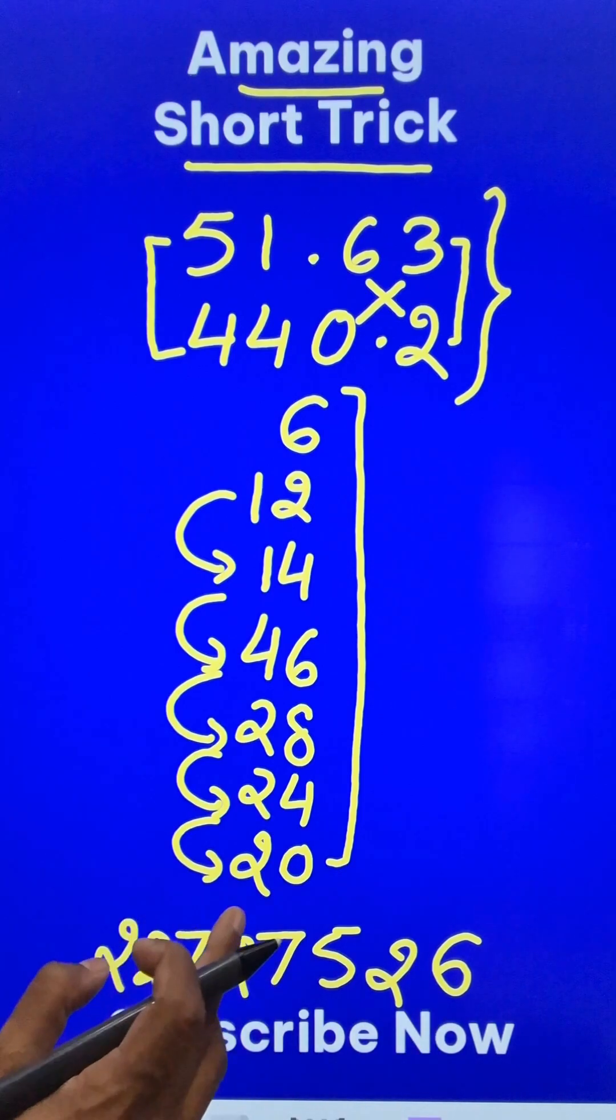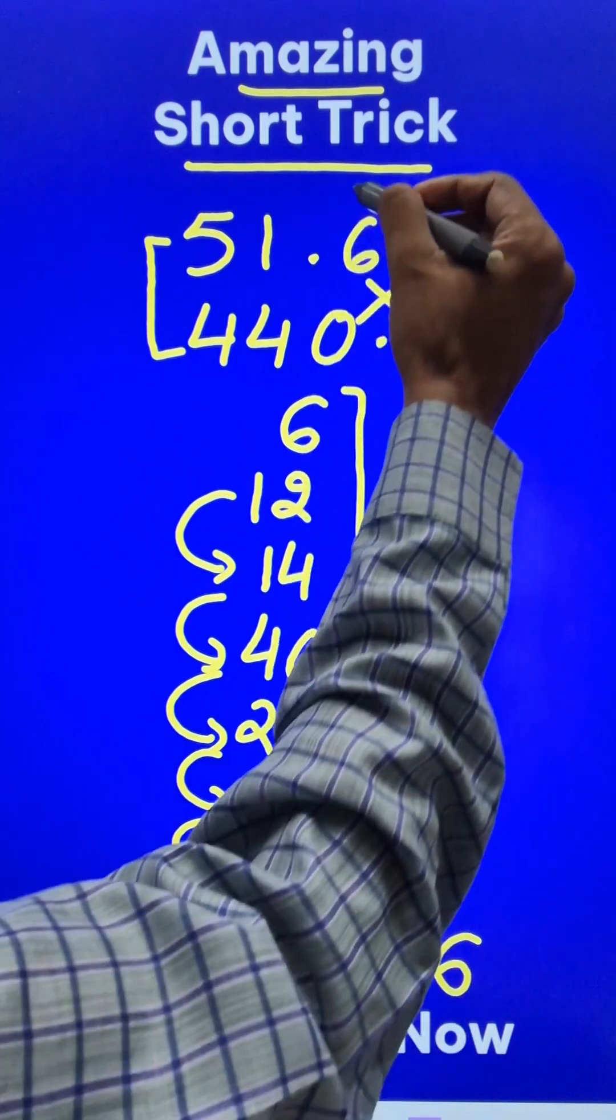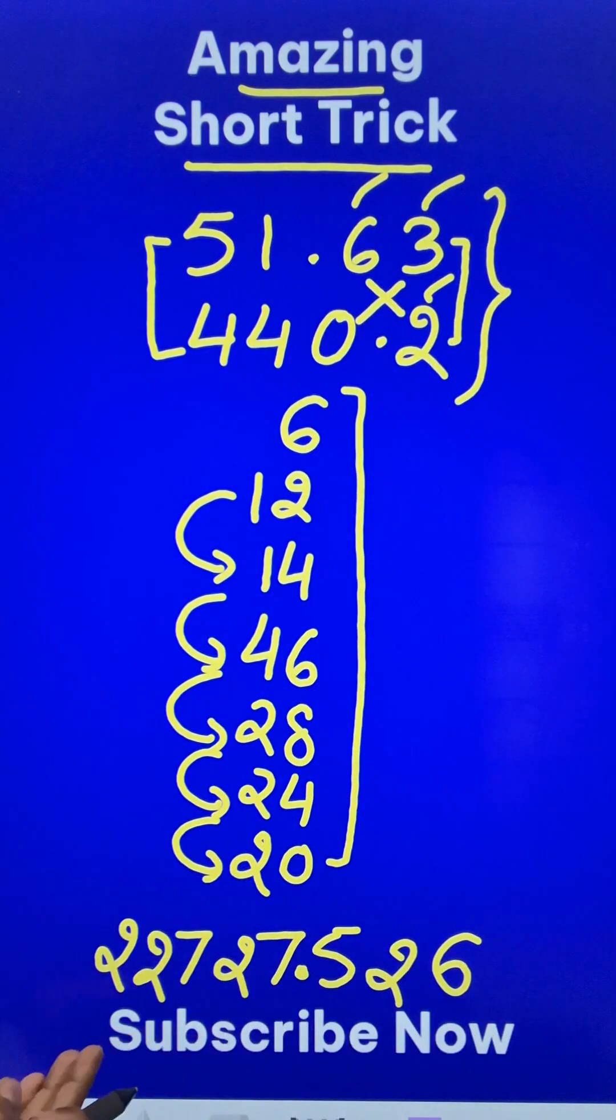You have a big number 22727526. Now where do you put the decimal? 1, 2, 3 digits from the right hand side and now pick up the calculators and check your answer.